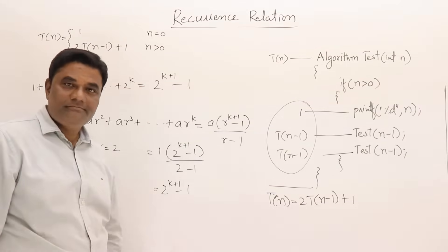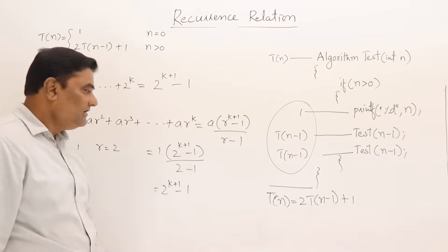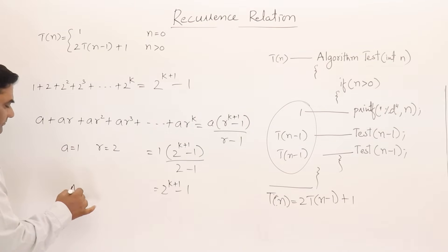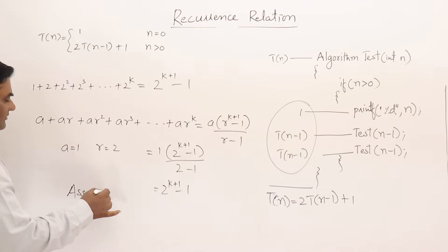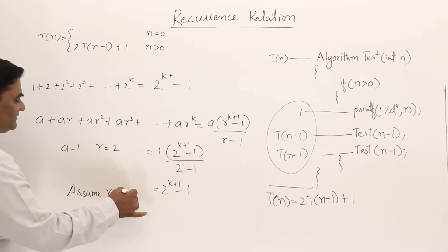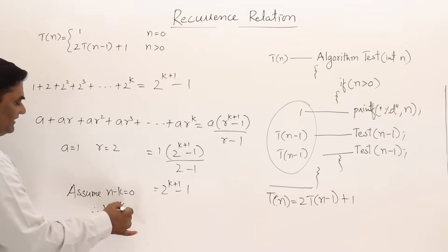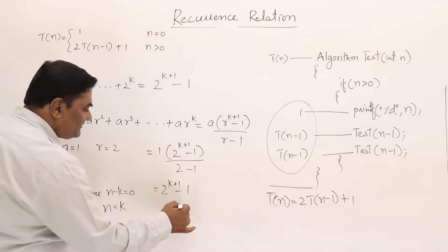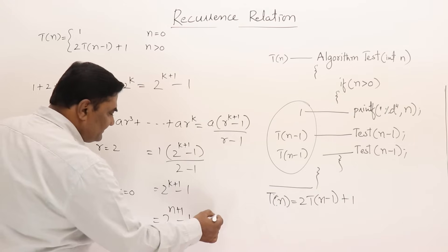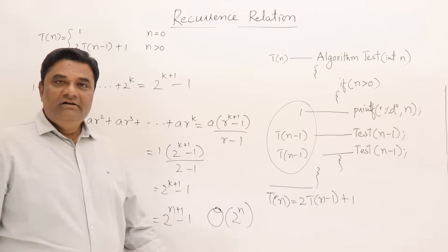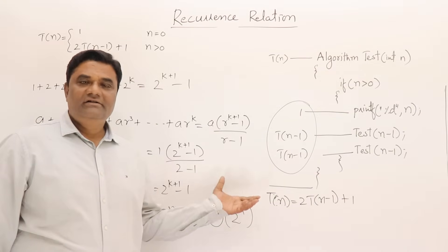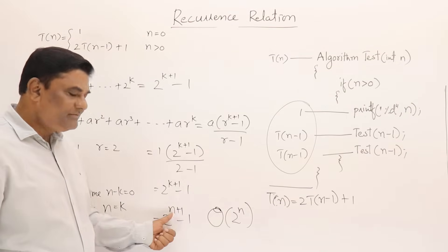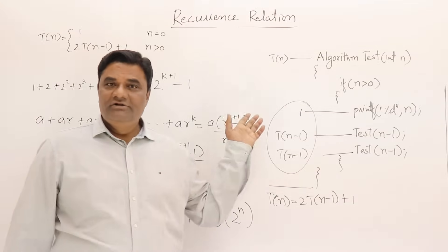So we directly get 2^(k+1) − 1. Now as per the assumption we take n − k = 0, therefore n = k. So the answer is 2^(n+1) − 1, and this is of order 2^n. So it belongs to the class O(2^n) or Θ(2^n).